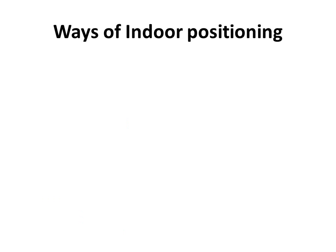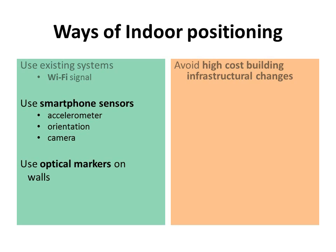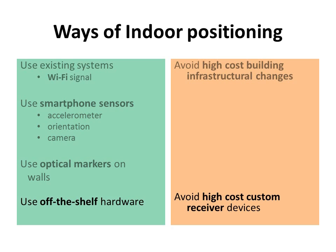Now we will discuss some ways of indoor positioning. It's better to use existing infrastructure like Wi-Fi for indoor positioning rather than having to build new infrastructural changes, which are costly and often not feasible. Also, we should try to use the sensors available in smartphones, which are more popular nowadays. Sensors like accelerometer and orientation sensors can be used to detect user's motion and heading, and this can be used for dead reckoning. Also, most phones come with an optical sensor — the camera — which can be used to detect optical markers in an indoor space. We should avoid high-cost custom-built user navigational devices and use off-the-shelf hardware like smartphones.